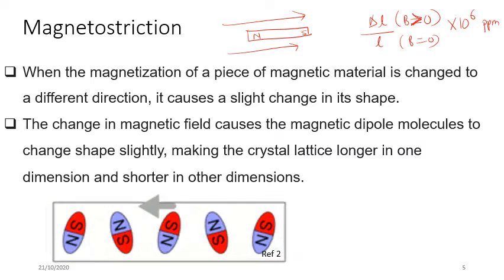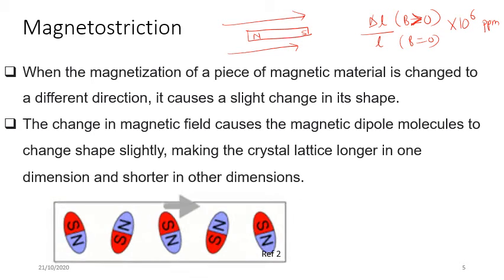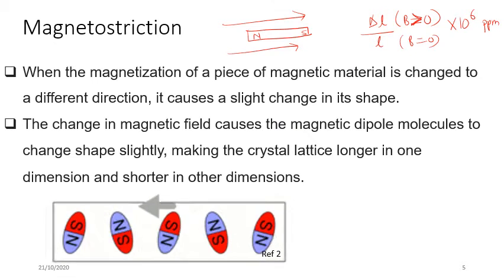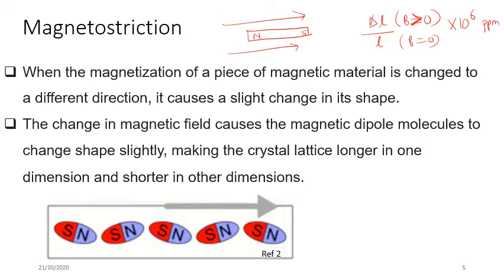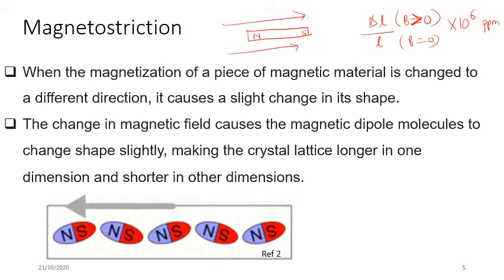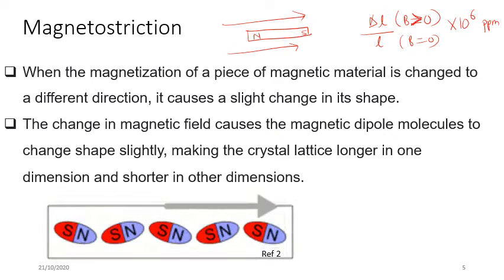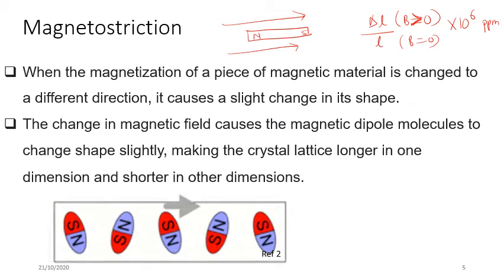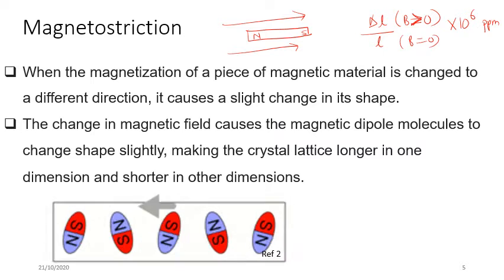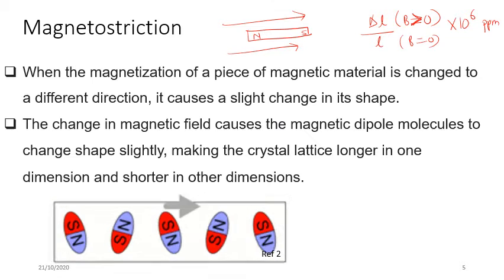The change in magnetic field causes magnetic dipole molecules to change shape slightly, making the crystal lattice longer in one dimension and shorter in another. When we apply a magnetic field, all domains align in that direction, resulting in elongation along the field direction and contraction in the perpendicular direction — that is the magnetostriction effect.